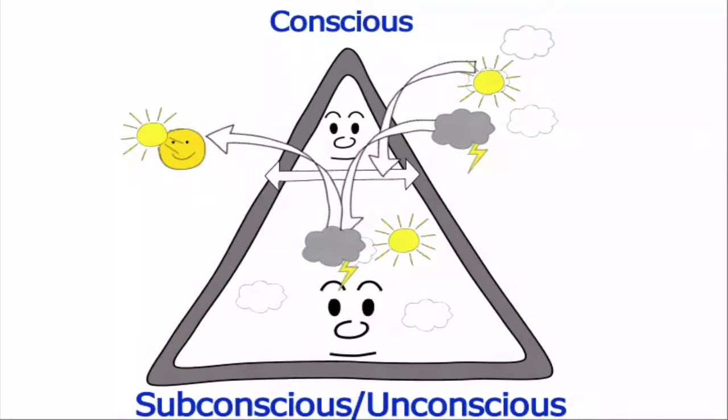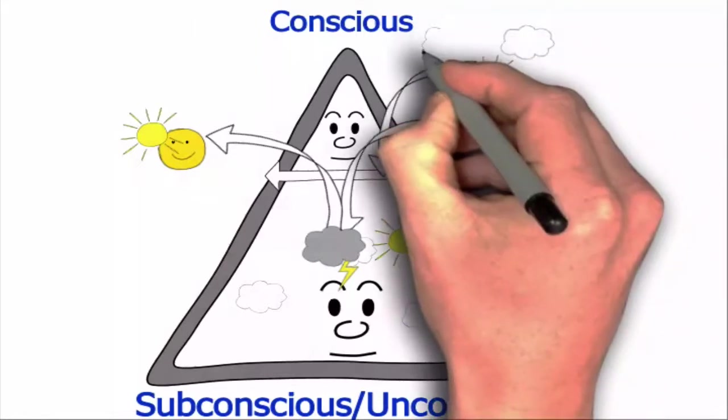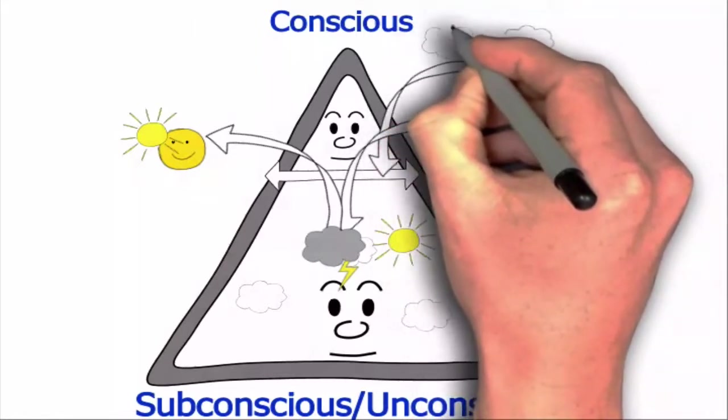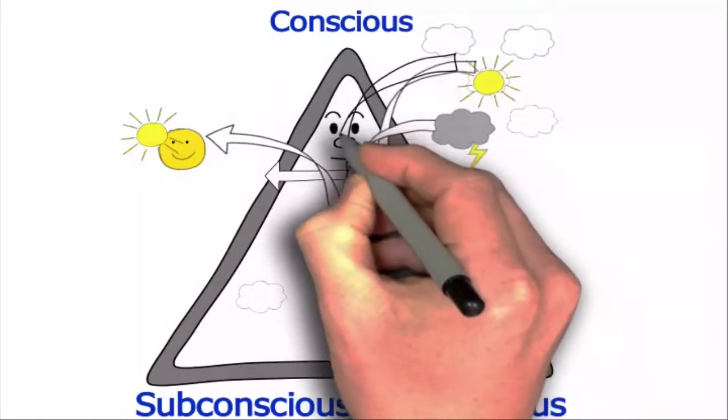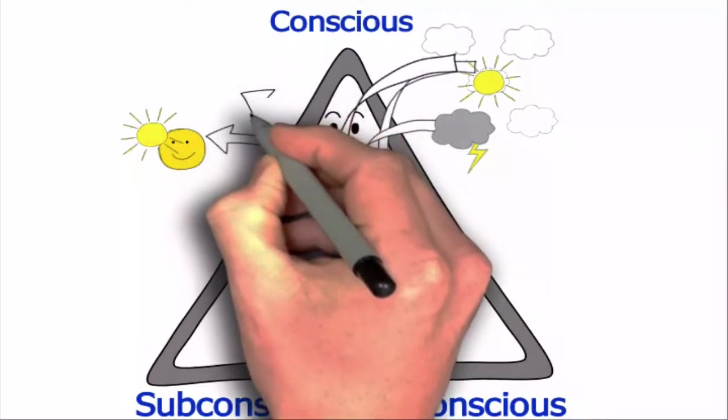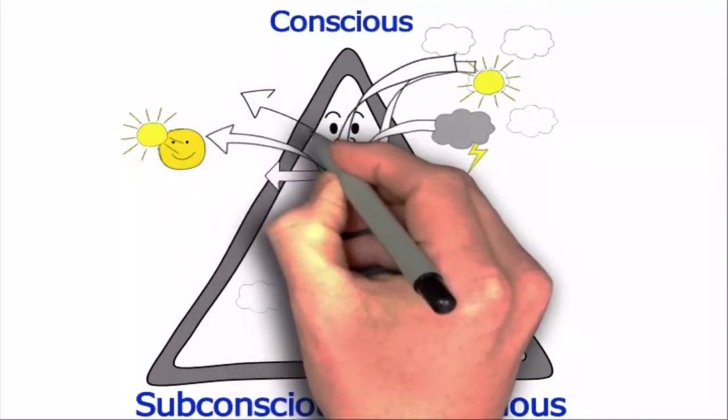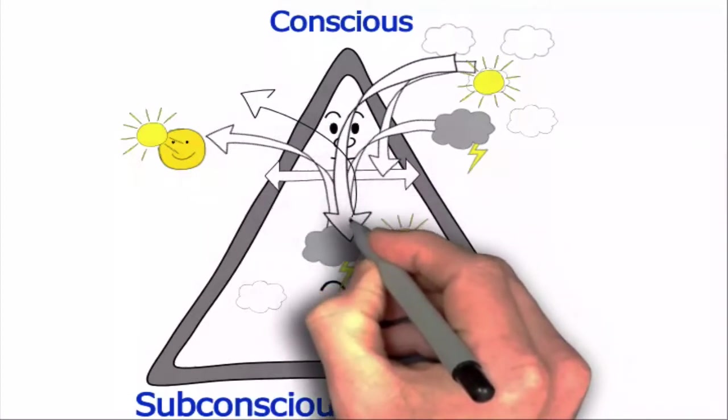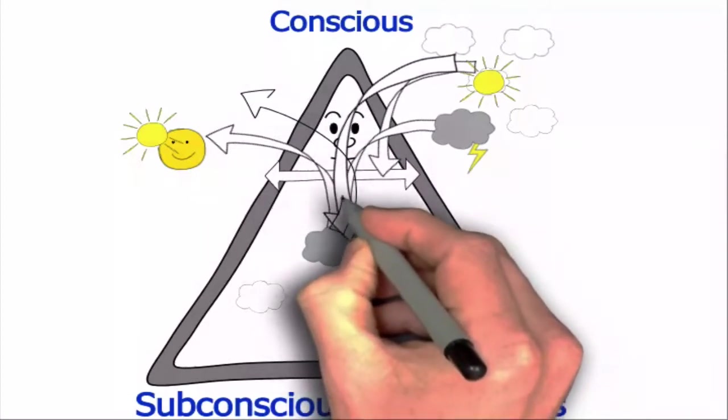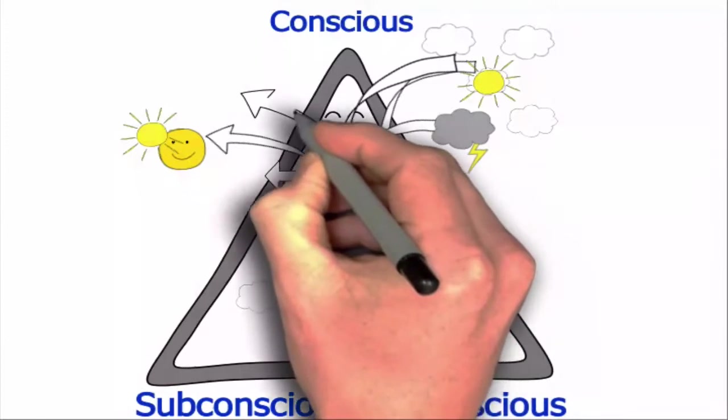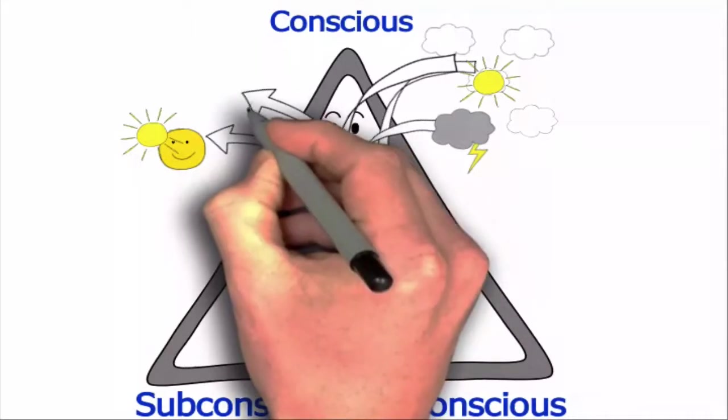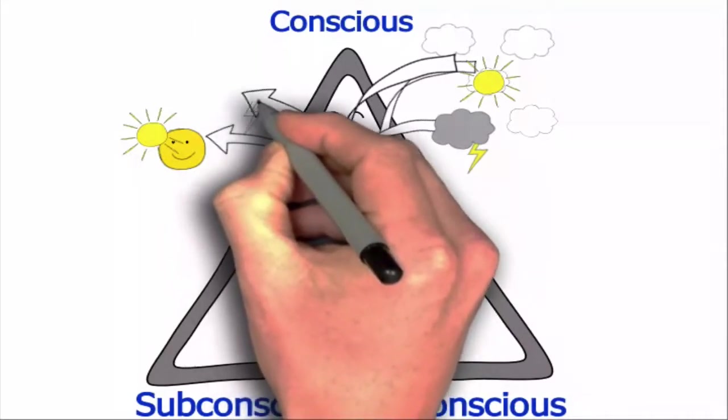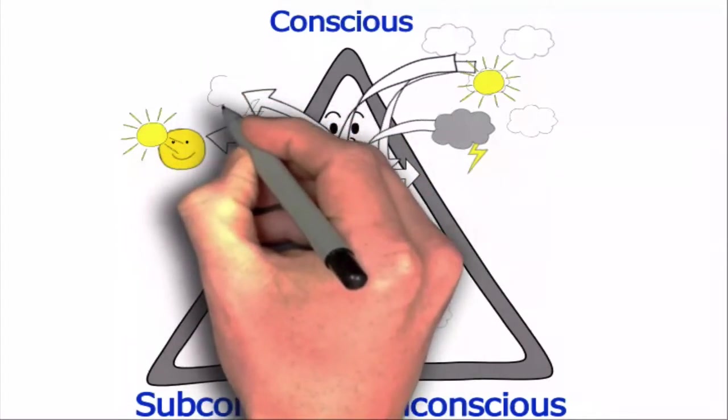So when something else comes along and triggers that feeling, whatever that may be, fear, anger, stress, tension, worry, then again, the same feeling rises up and we have an experience of it in the physical world, and the practical world. And this happens extremely fast, something like two thousandths of a second, the speed of these thoughts here, where information coming in accesses stuff inside and creates an experience that we are then consciously aware of, something we're thinking, something we're feeling, an emotion in some way, shape or form.